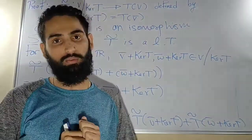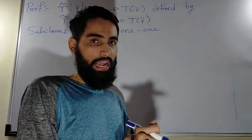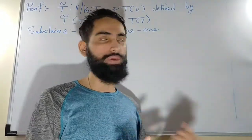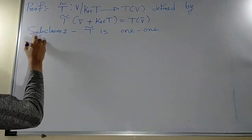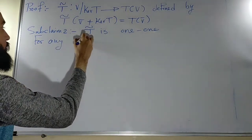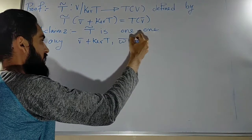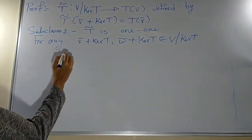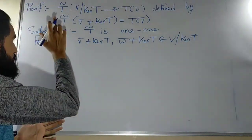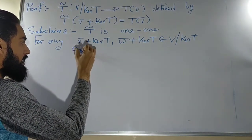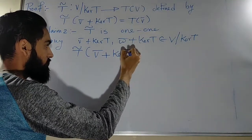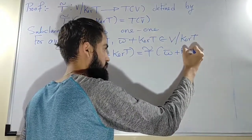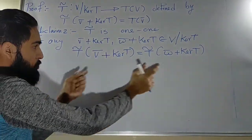Sub-claim two: T̃ is one-one. To prove a function is one-one, we show f(x) = f(y) implies x = y. I consider any two elements v̄ + kernel(T) and w̄ + kernel(T) from the domain V/kernel(T), and I assume T̃(v̄ + kernel(T)) equals T̃(w̄ + kernel(T)). I want to prove these two cosets are the same.